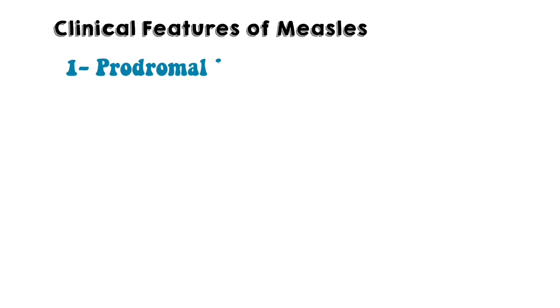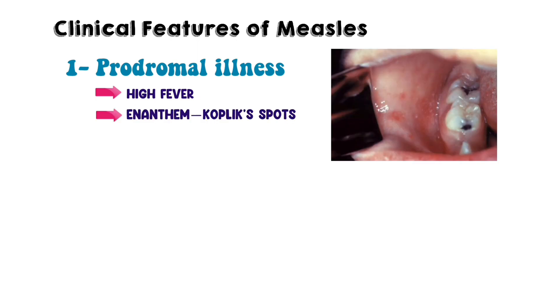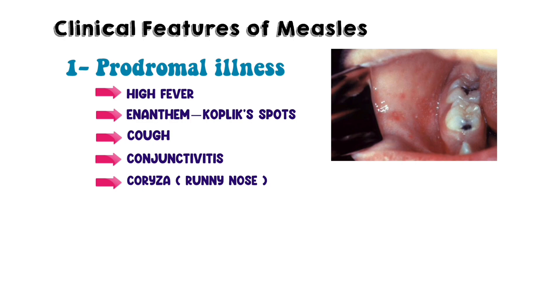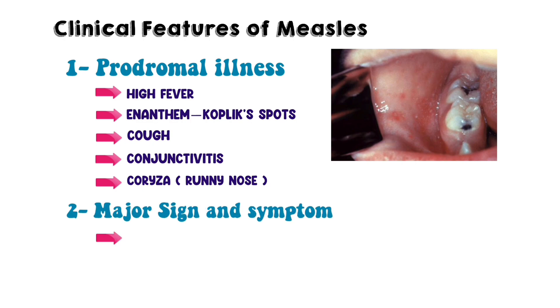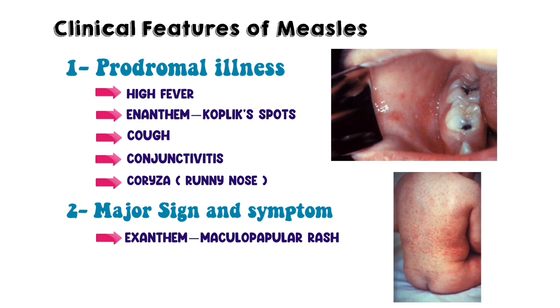To summarize the clinical features of measles properly: number one, prodromal illness, which comprises high-grade fever, enanthem (Koplik spots), cough, conjunctivitis, and coryza. Number two, the major sign and symptom of measles — exanthem, the maculopapular rash.